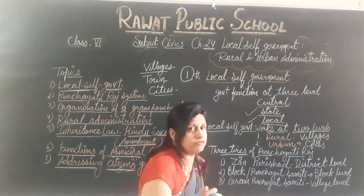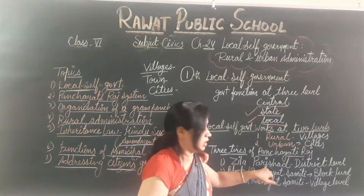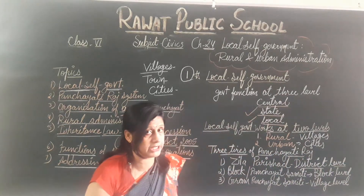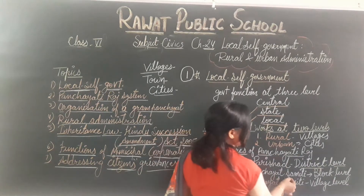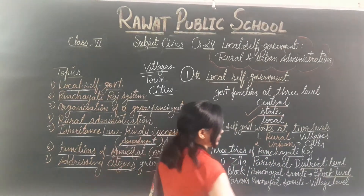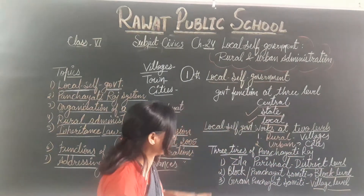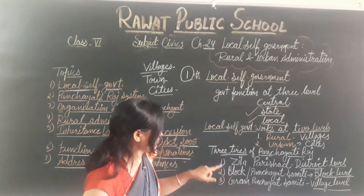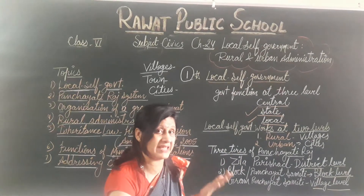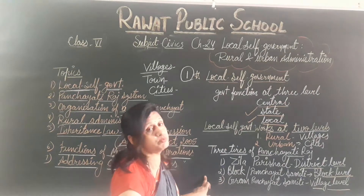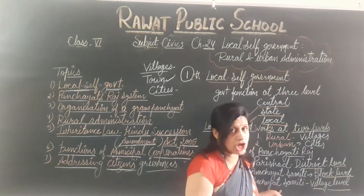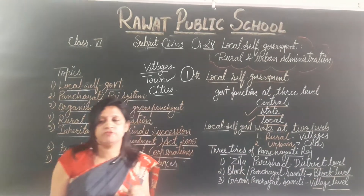The first tier of the Panchayati Raj system is Zila Parishad, also known as District Level. The second is Block Panchayat Samiti, which works at the Block level. And the third is Gram Panchayat Samiti, which works at the Village level. So the three tiers of the Panchayati Raj are: first, Zila Parishad at the District level; second, Block Panchayat Samiti at the Block level; and third, Gram Panchayat Samiti at the Village level.